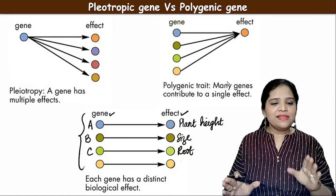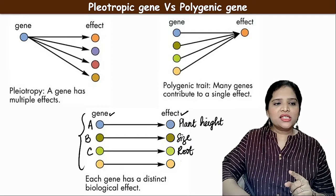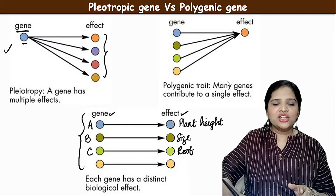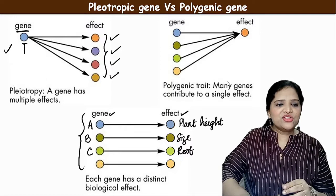Whereas in a pleiotropic gene, one gene controls different characters in an organism simultaneously — this one gene controls different characters at the same time, and such a gene is called a pleiotropic gene.